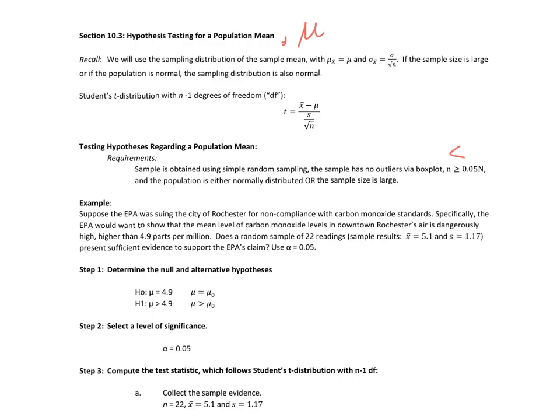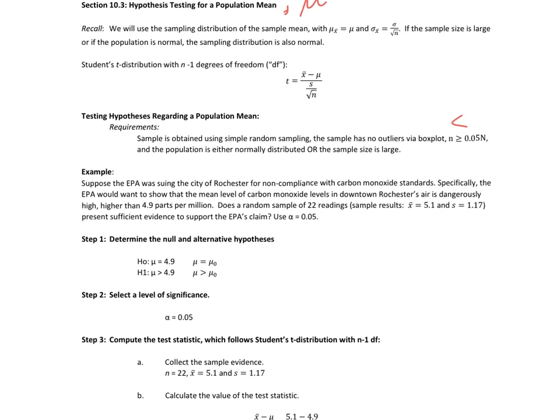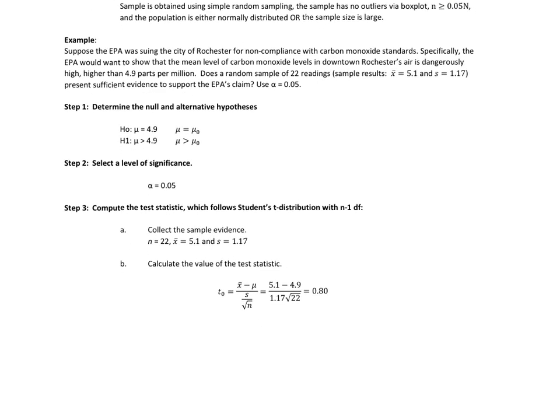Let's use this example to figure out how our hypothesis test is going to run. Suppose the EPA was suing the city of Rochester for non-compliance with carbon monoxide standards. Specifically, the EPA would want to show that the mean level of carbon monoxide in downtown Rochester's air is dangerously high, higher than 4.9 parts per million. Does a random sample of 22 readings with sample results x̄ = 5.1 and s = 1.17 parts per million present sufficient evidence to support the EPA's claim? Use alpha equals 0.05 level of significance.